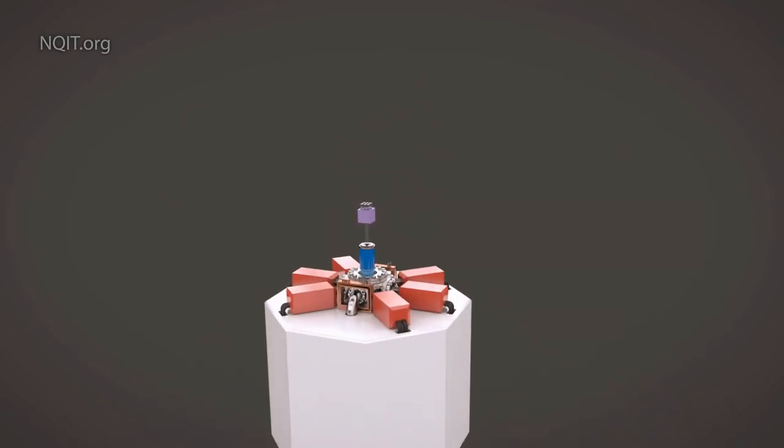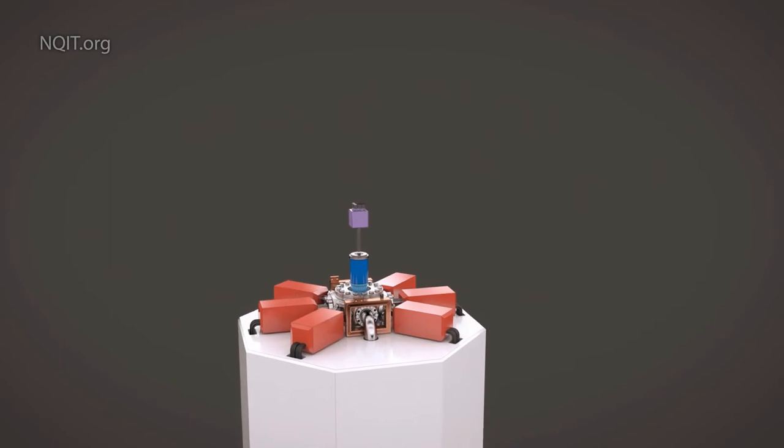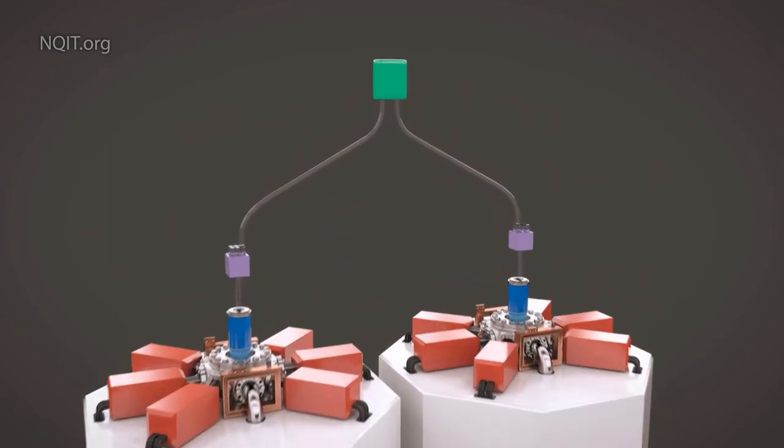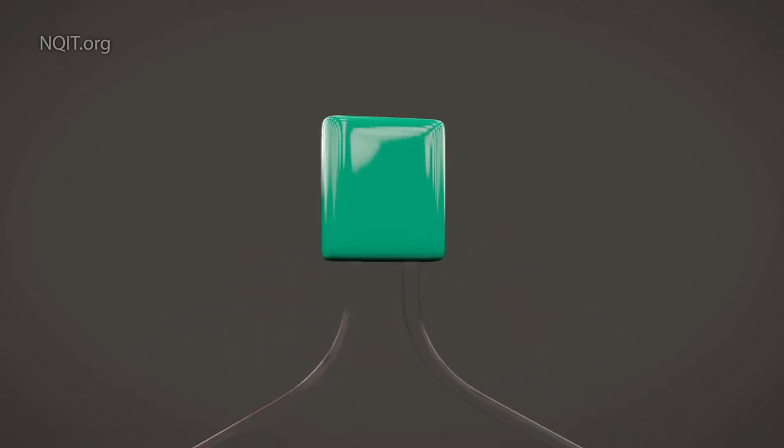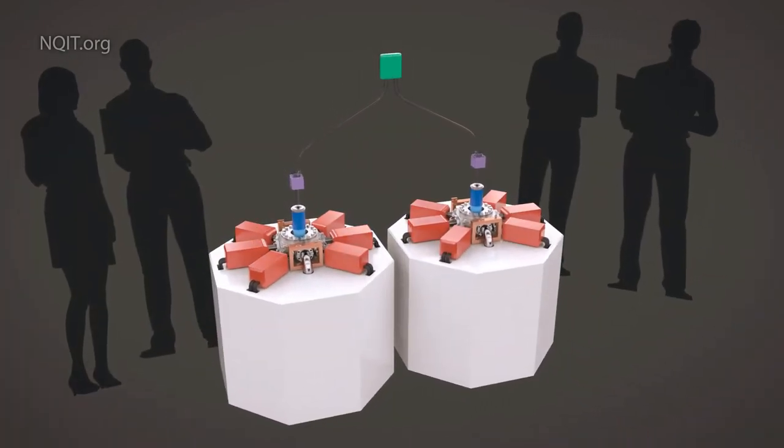This complete module is a small quantum processor but now consider two linked modules. When photons meet at the entangler unit in the middle, the ions that created those photons become quantum entangled and so the two modules combine as a single quantum machine.